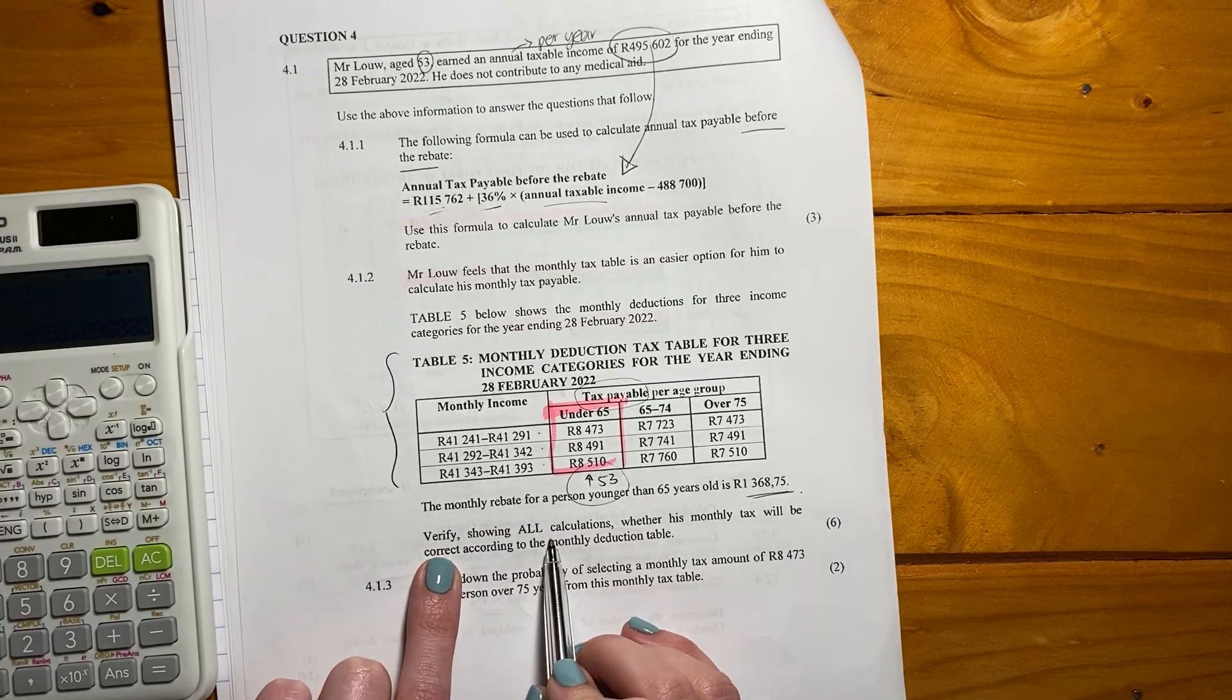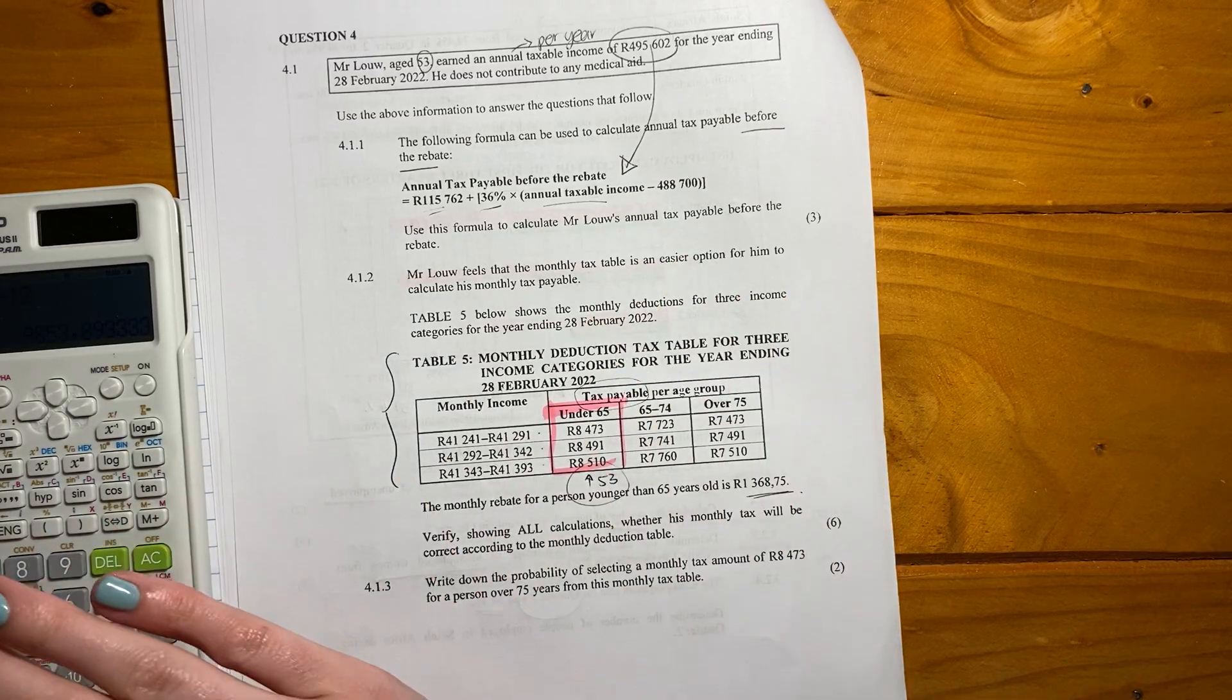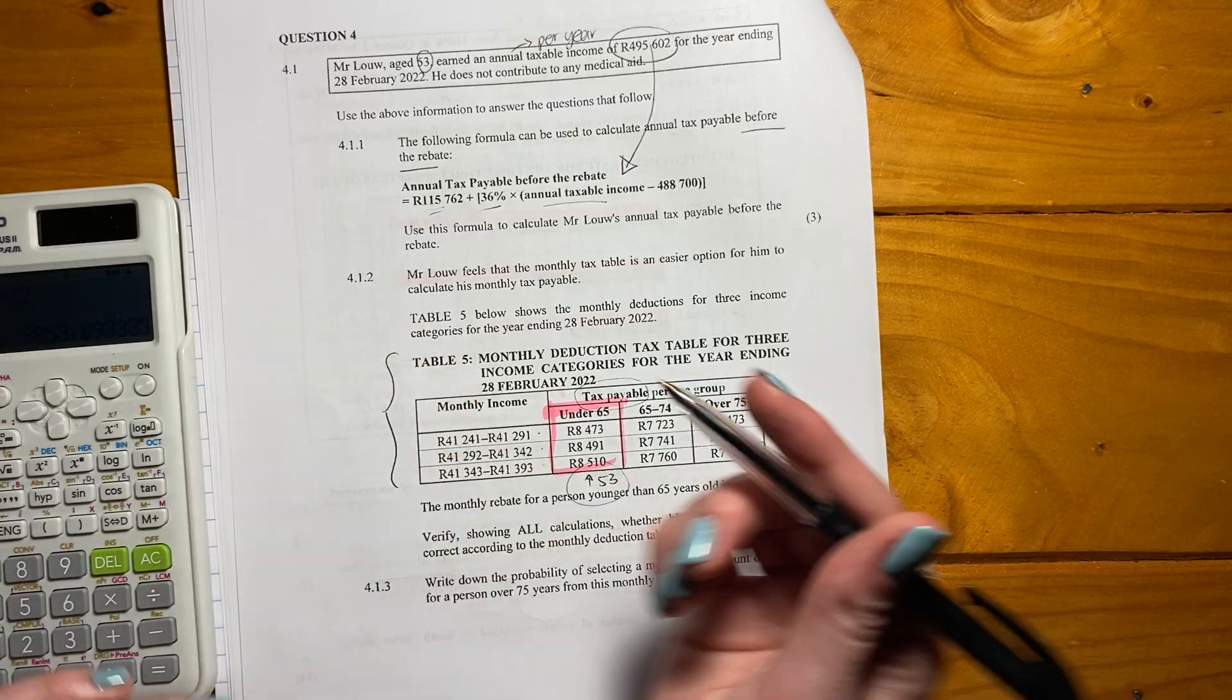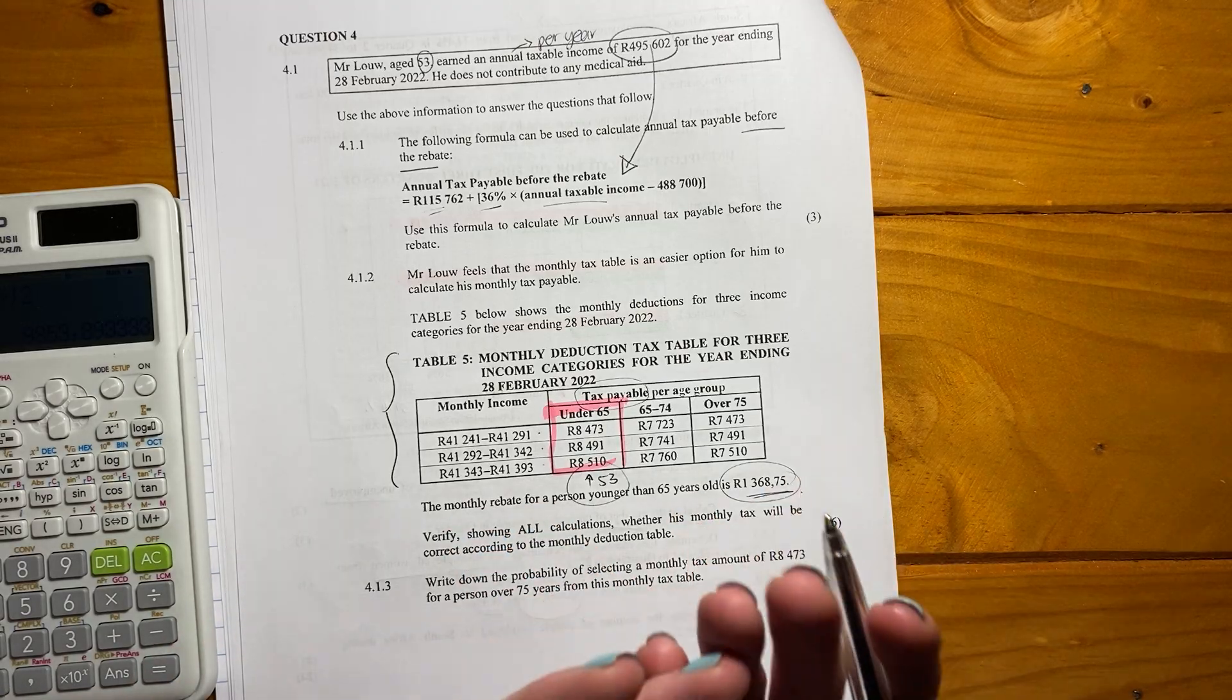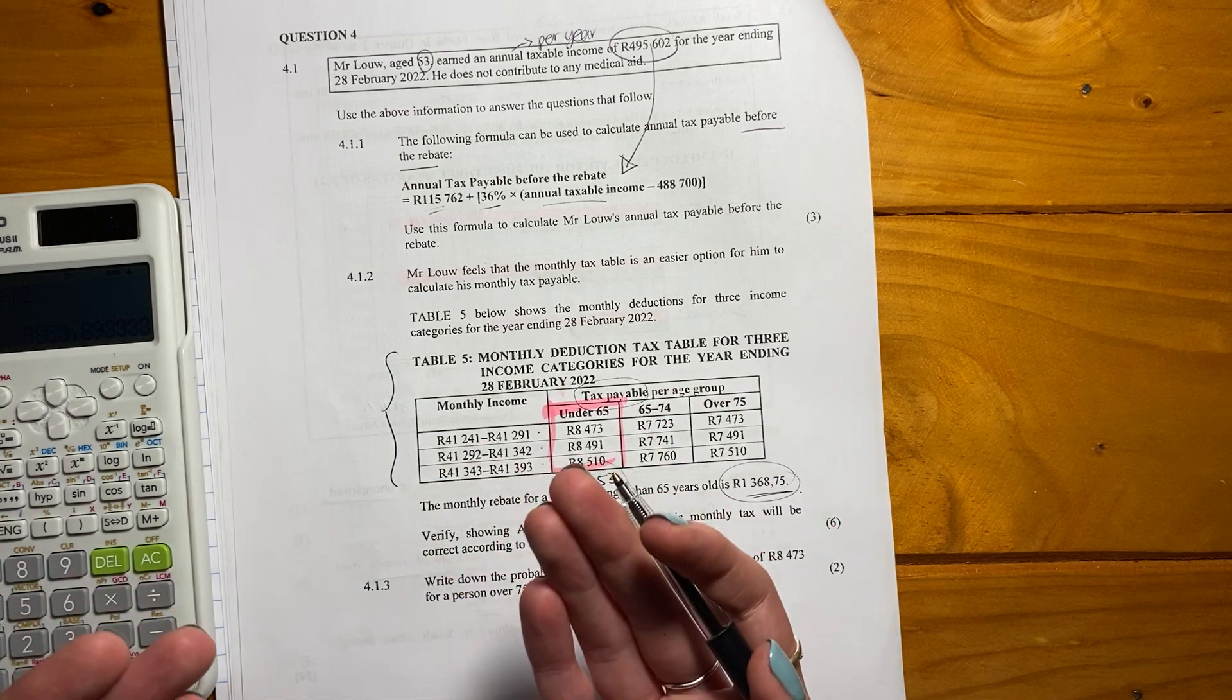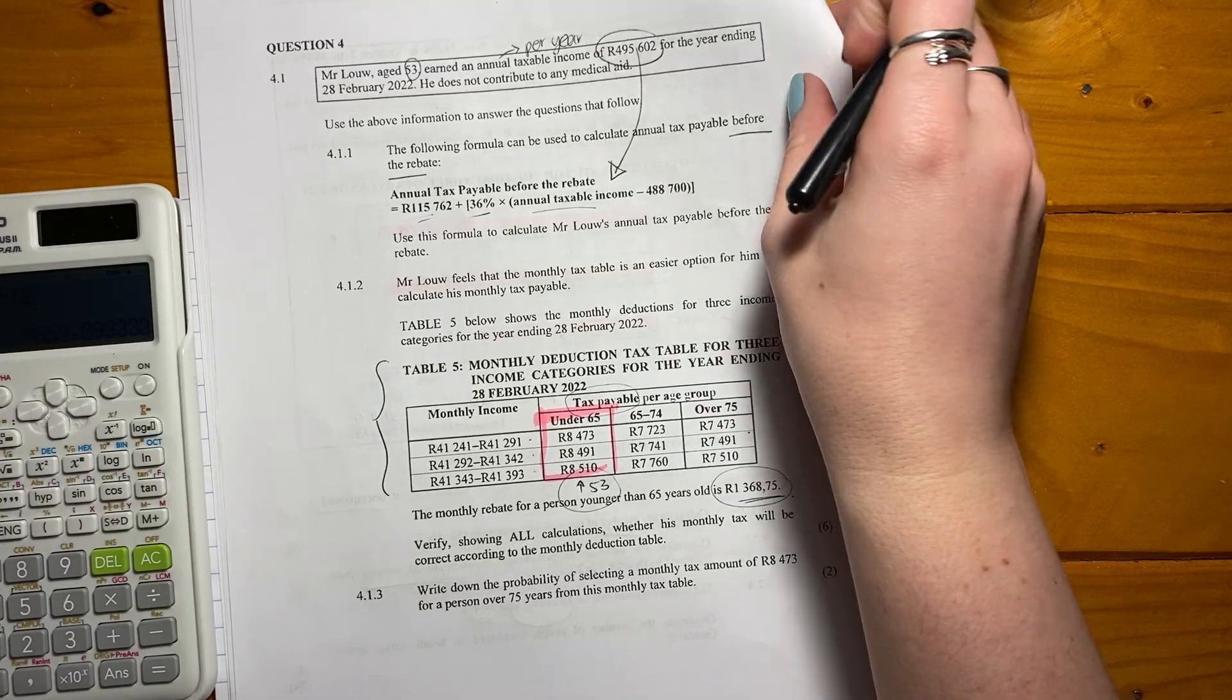Verify, showing all calculations whether his monthly tax will be correct according to the monthly deduction table. So they're saying, use what you calculated in 4.1.1 and calculate what his tax payable would be, given that you have the rebate over here. So we'll do that calculation, and then compare it to what it would be from this monthly tax table and see if those two things are the same. Because that's effectively what he's saying. He's saying, I want to use this table, I don't want to do all those calculations. So let's see if it's the same.